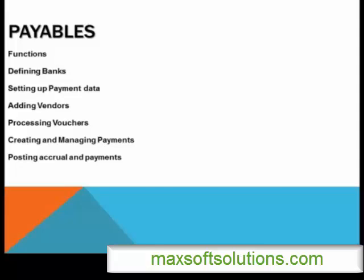The best method for you is to go for the business process itself. For example, P2P module — you have purchasing, you have inventory, you have accounts payable, you have general ledger. All these four modules — that will be better. At least you will get to know one particular line of business.